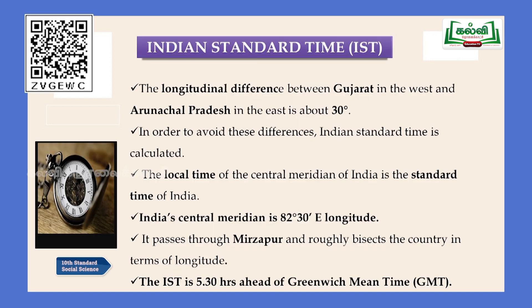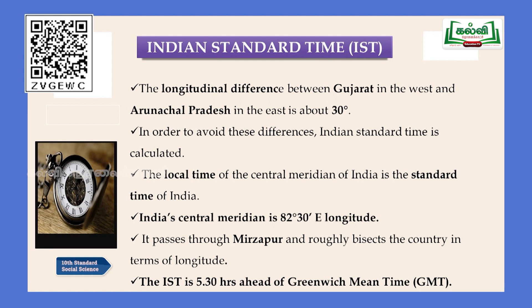Indian Standard Time: Time is calculated based on longitudes. The earth has two important imaginary lines - latitudes and longitudes - which meet at a point called the grid. The longitudinal difference between Gujarat and Arunachal Pradesh is about 30 degrees. Gujarat is at 68 degrees 7 minutes east longitude, and Arunachal Pradesh is at 97 degrees 25 minutes east longitude. The difference is approximately 30 longitudes.